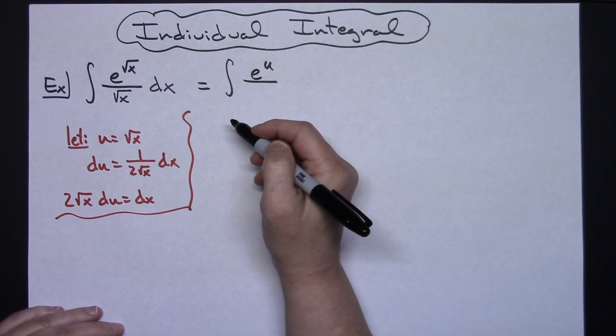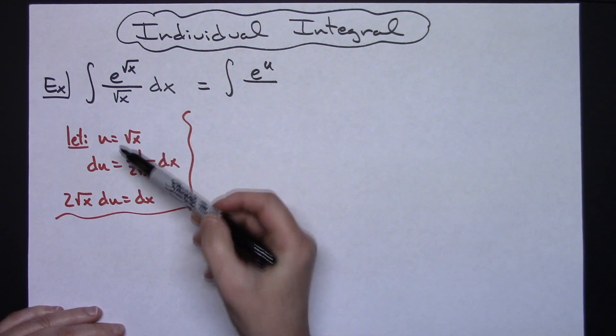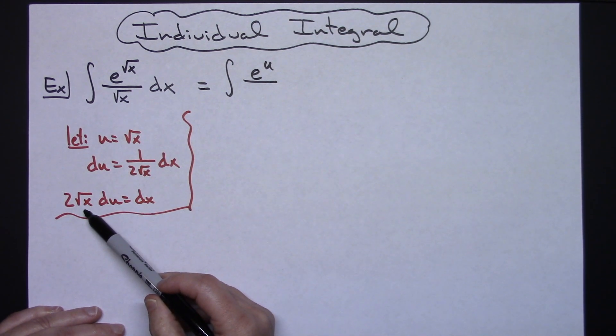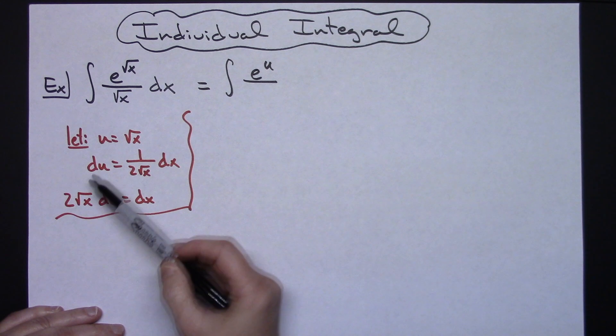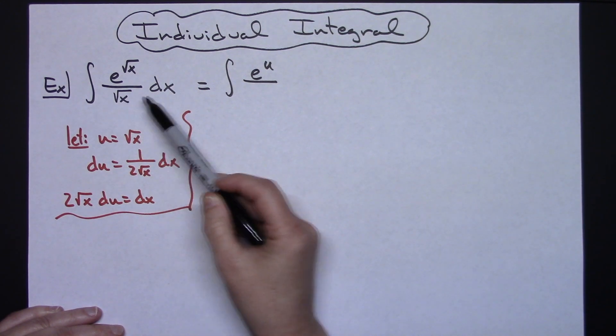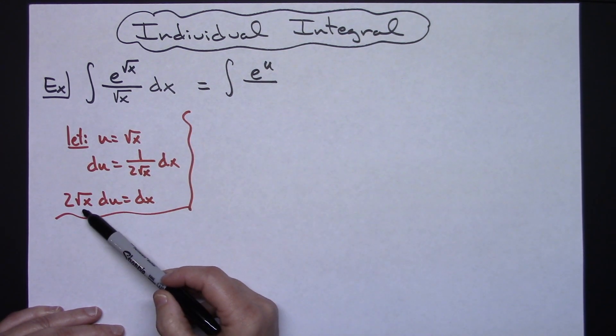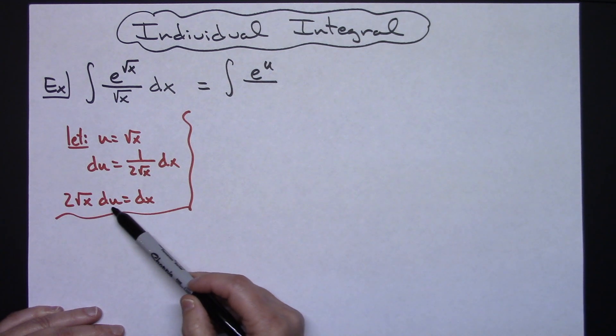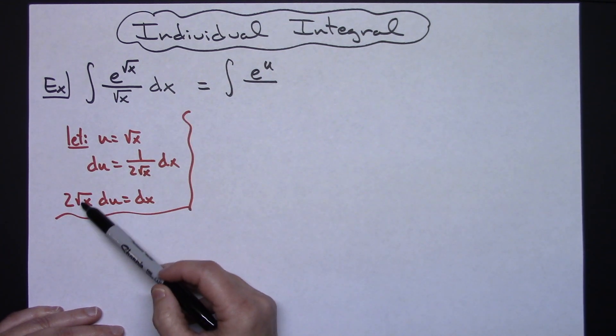Now on this one I'm going to either, since I have this 2 square root of x as my dx, I can either choose to leave this square root of x like that or I could go ahead and when I write this for my dx go ahead and change this to a u.